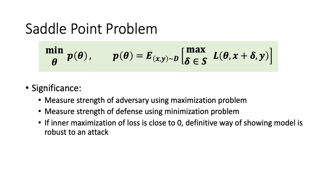The significance of this saddle point problem is that we can measure the strength of an adversary using the inner maximization problem while also measuring the strength of a defense using the outer minimization problem. If an inner maximization of loss is close to zero, it's a definitive way of showing that the model is robust to that attack.